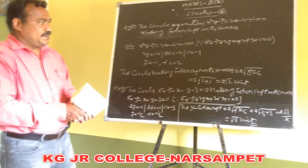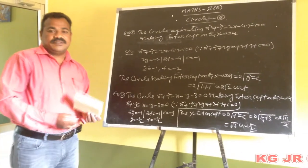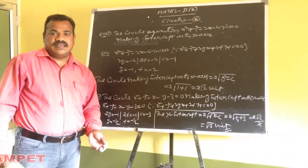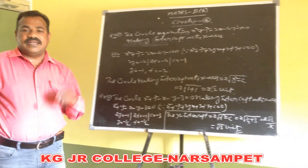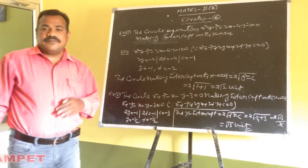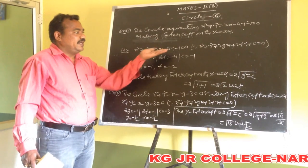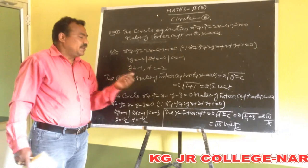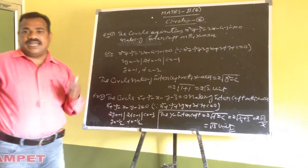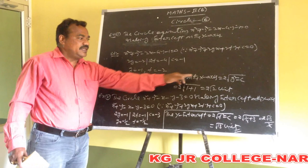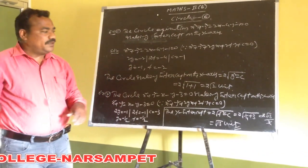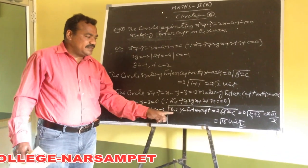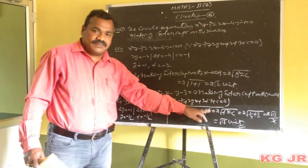These are the two examples. To find the x-intercept or y-intercept of a circle, we first write the given circle equation and compare it with the general form to get values of g, f, and c, then substitute into the formula 2 into root of g square minus c for the x-intercept or 2 into root of f square minus c for the y-intercept.